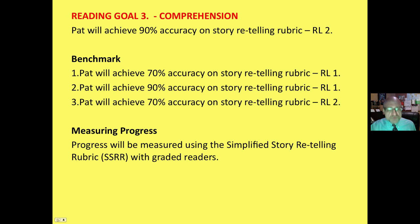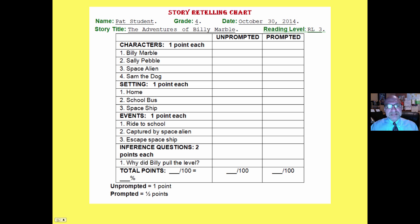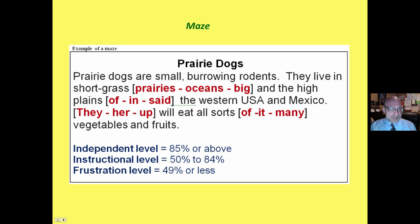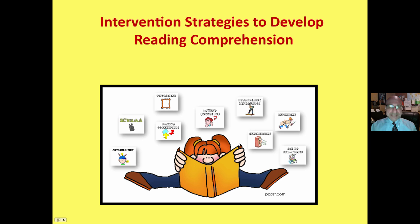Here is one way that progress could be measured: a simplified story retelling rubric. There are other ways, but here is an example of a story retelling chart or rubric. Keep it simple. A maze could be another form of comprehension assessment. These are just two examples.